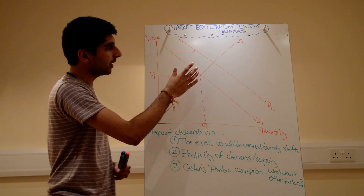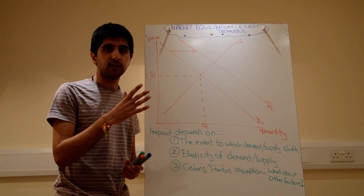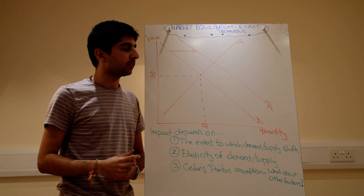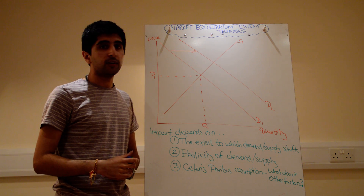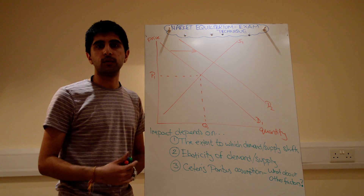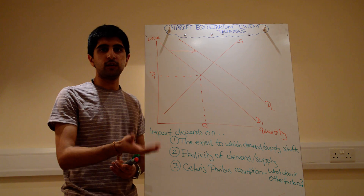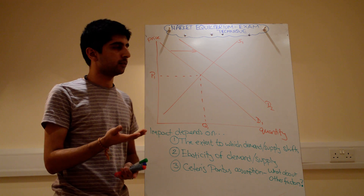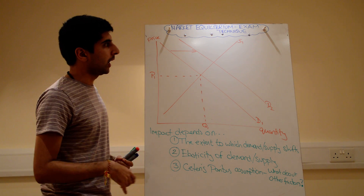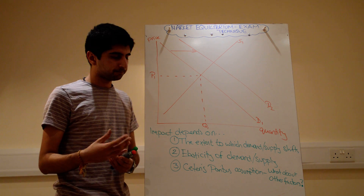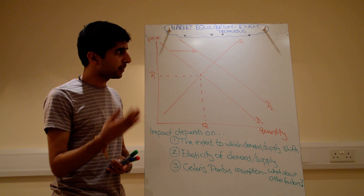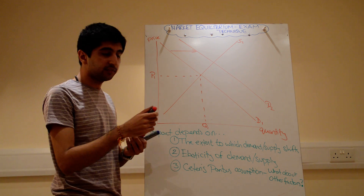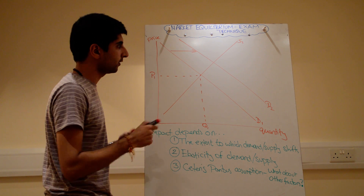At the same time, let's say supply shifted to the left. Maybe there's been an increase in the price of raw materials, which increases the cost of production, an increase in the price of commodities, a reduction in productivity, or an indirect tax on the good — whatever it might be, supply has shifted to the left.